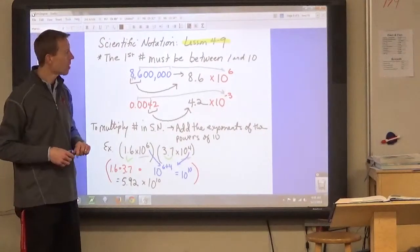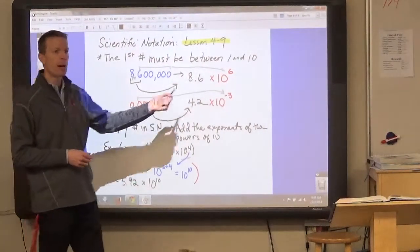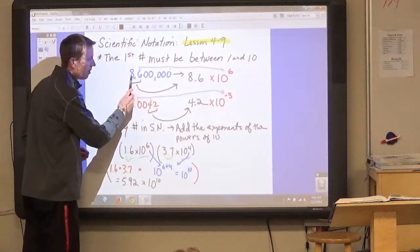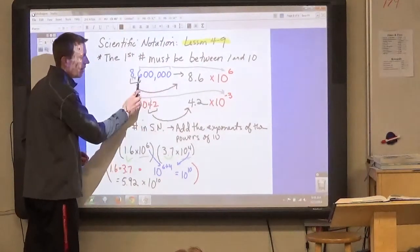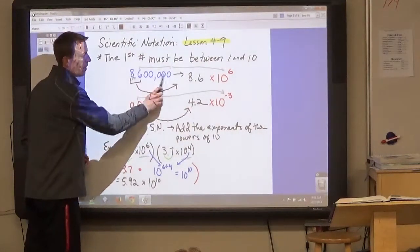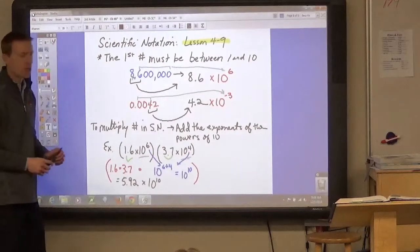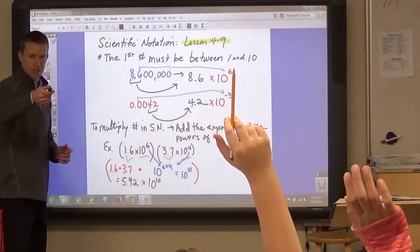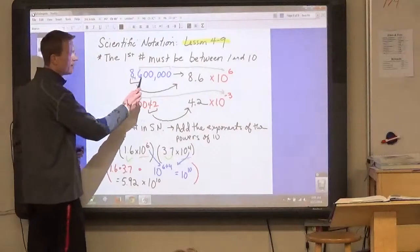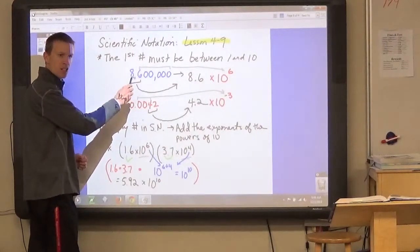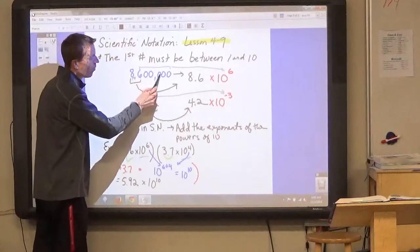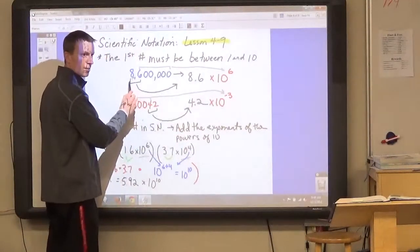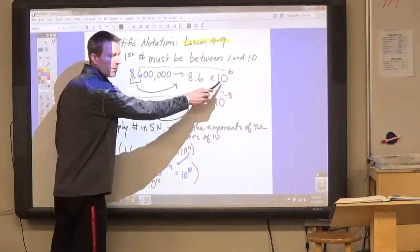Does that make sense? Then the next part of scientific notation is the power of 10. It's the power of 10 from the first digit on. In other words, how many digits behind the first number is there? Six, so it would be 10 to the 6. Right! There's 6 digits behind the first number. That gives us the power of 10. So you'd write 8.6 times 10 to the 6th power.